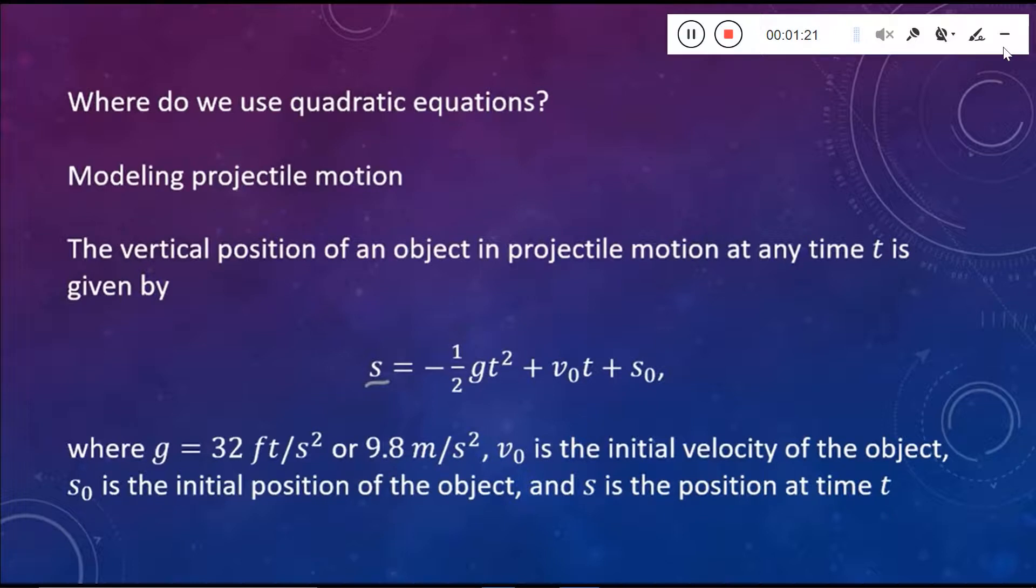Where g, if we're talking feet per second squared, it's 32. If we're talking meters per second squared, then it's 9.8. V naught is the initial velocity of the object. So that's how fast is this thing going right when we fire it or right when we launch it. And then s naught is the initial position of the object. We don't necessarily have to be starting at the ground. We could be starting some number of feet above the ground when we launch it or when we fire it. So that starting height, how far we are off the ground, that's s naught.